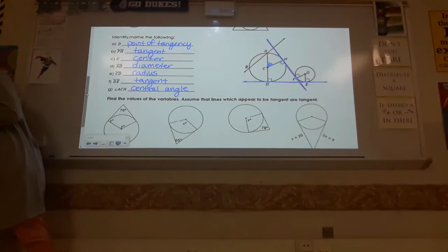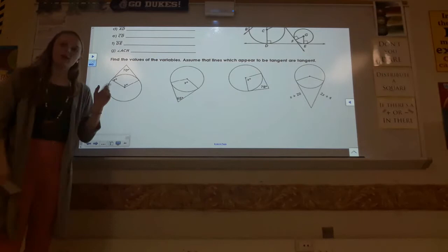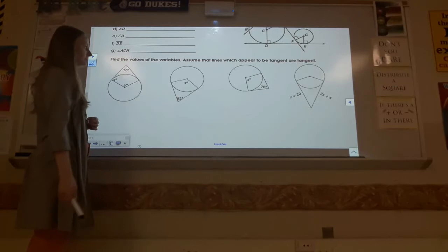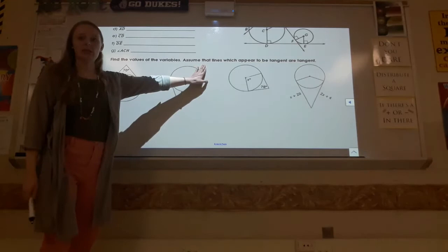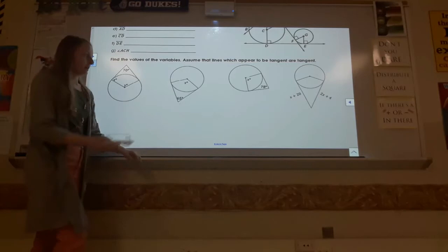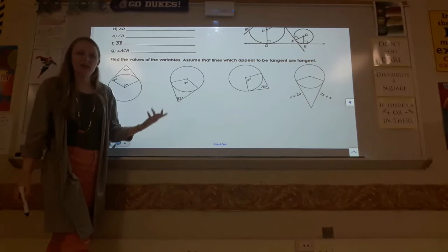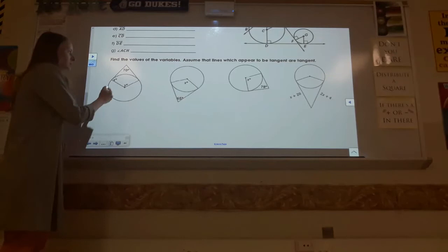Now we can get to the solving situations where we're going to start using those two theorems. I'm trying to find the value of the variables, which is x in all these situations. The directions say assume lines that appear to be tangent are tangent. You can't just assume that something is a tangent if it's drawn kind of sloppy. But this one allows you to assume that something that looks like a tangent is. So what's interesting is that I have these two tangents.